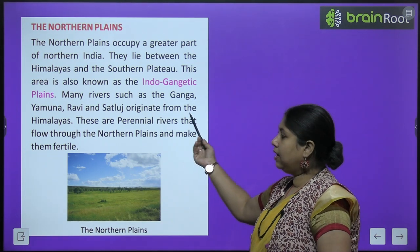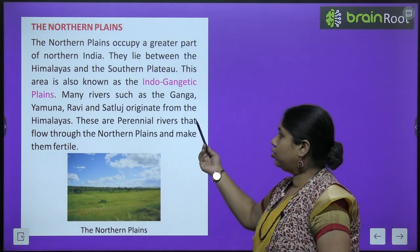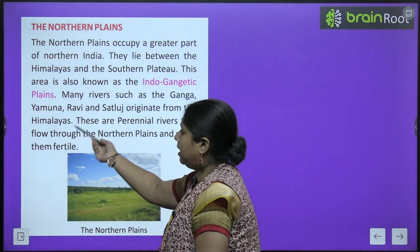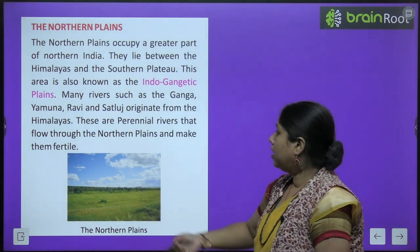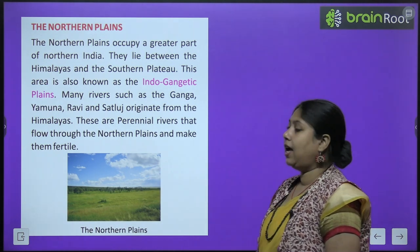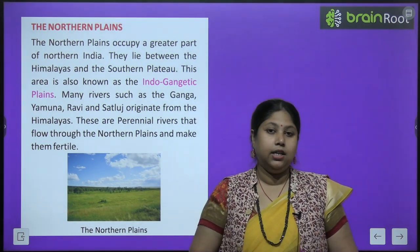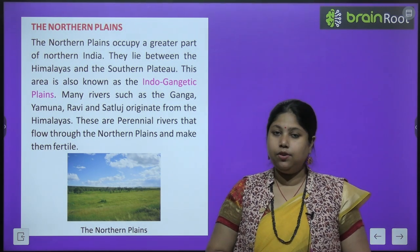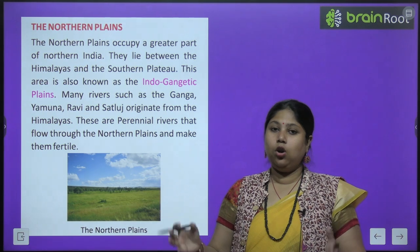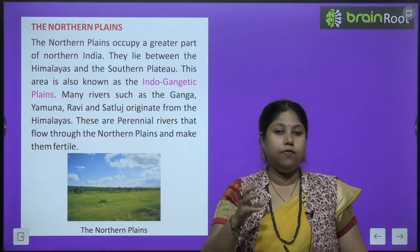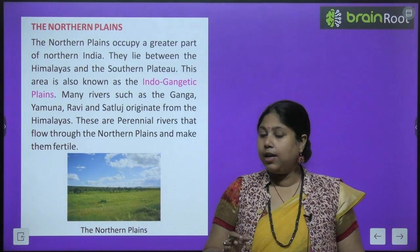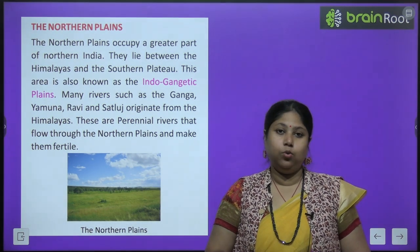Many rivers such as Ganga, Yamuna, Ravi and Satluj originate from the Himalayas. Yeh saari nadiyan Himalayas ki god se nikalti hai. These are perennial rivers that flow through the Northern Plain and make them fertile. Yeh jo rivers hai yeh perennial rivers hai aur yeh Northern Plains mein bahti hai, aur yeh saal bhar Northern Plains ko bahut zyada fertile aur upjaao banaati hai — aur isliye North mein bahut zyada kheti hoti hai.